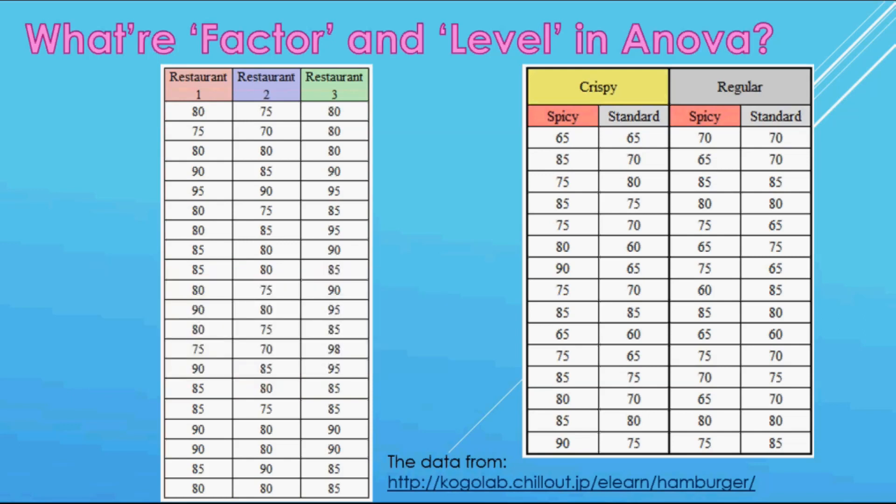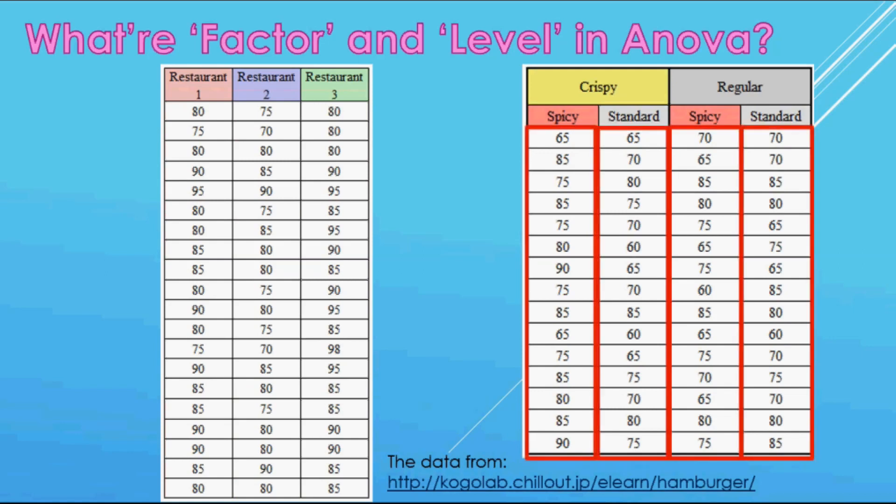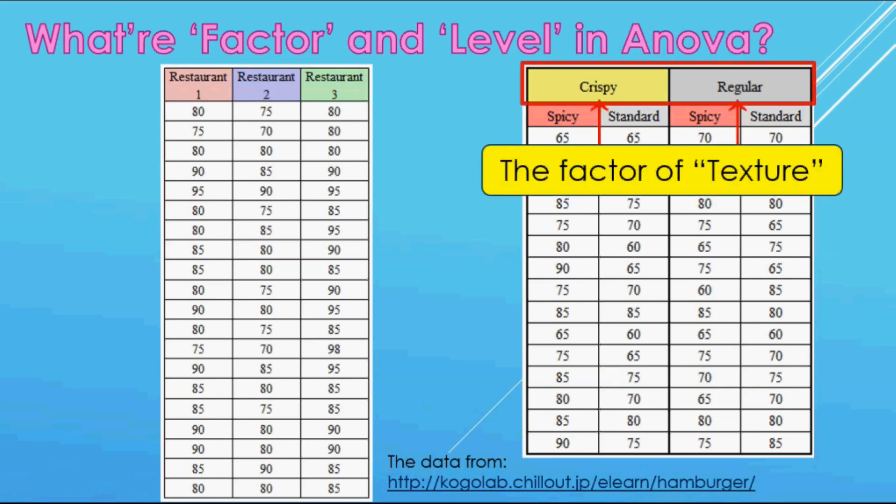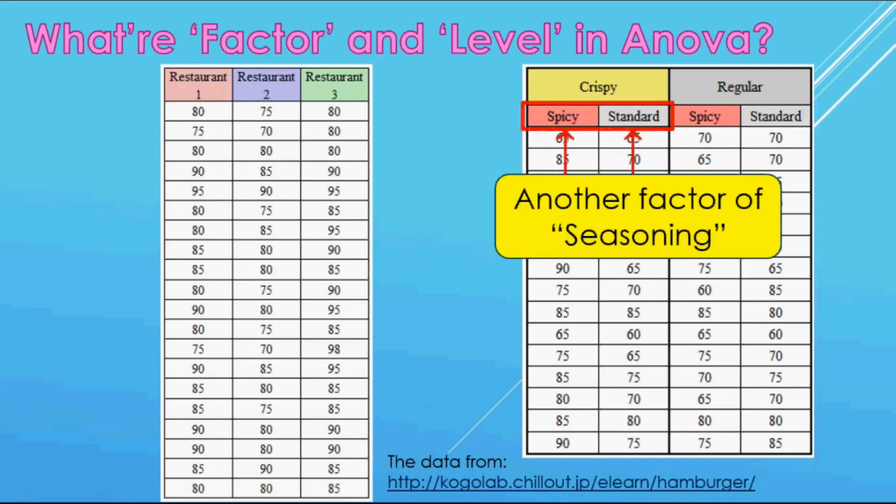Then look at the table on the right. This table has four data groups. There are also the scores of new fried chicken prototype dishes reviewed by another 60 people. There is the factor of texture, such as crispy and regular, and another factor of seasoning, such as spicy and standard.